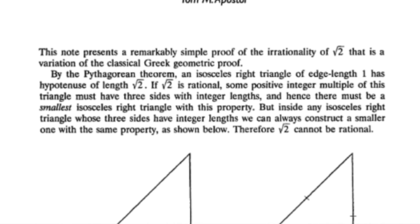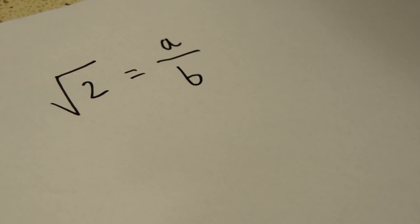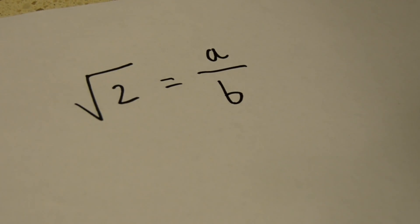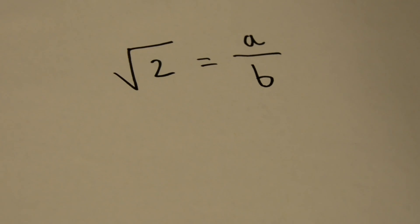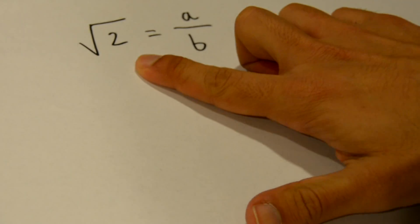it as a ratio a over b, where a and b are integers. This is a fully reduced fraction, which means that a and b are the lowest integers that can be used to express the square root of 2.